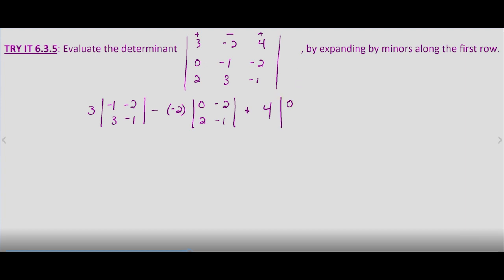So now if we evaluate that, that's going to be 3 times negative 1 times negative 1 is 1, minus 3 times negative 2 is negative 6.